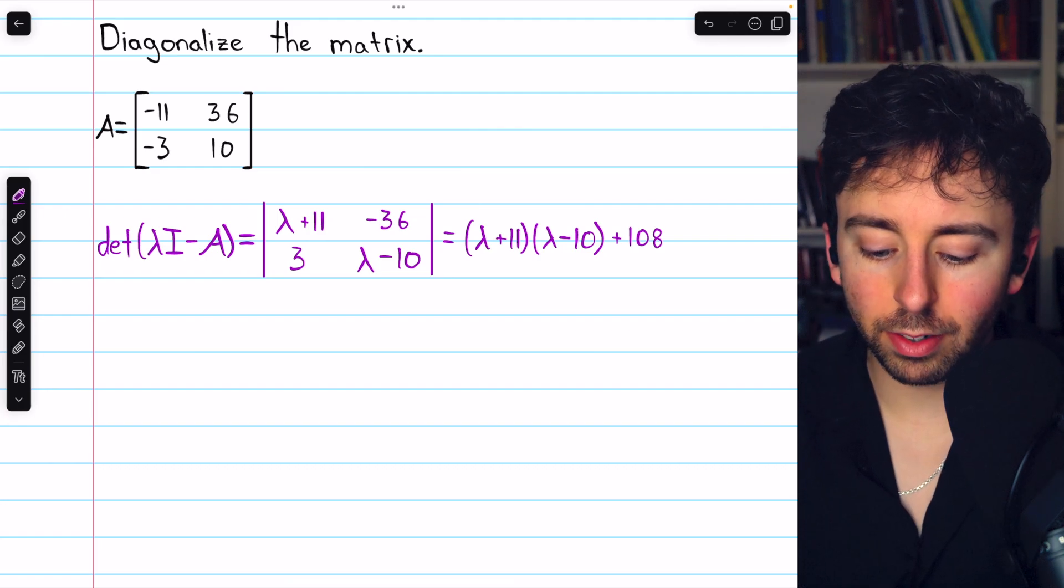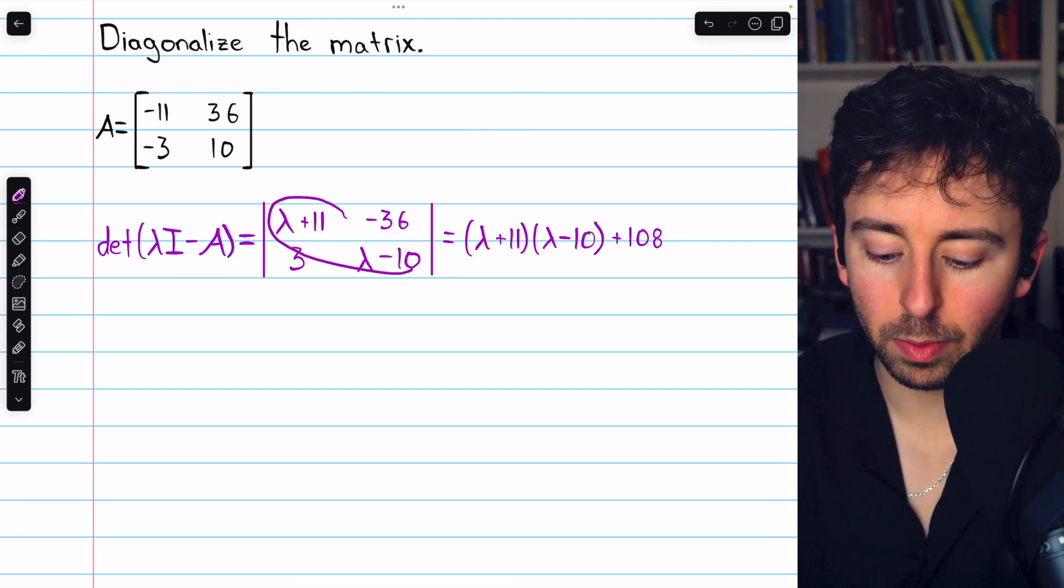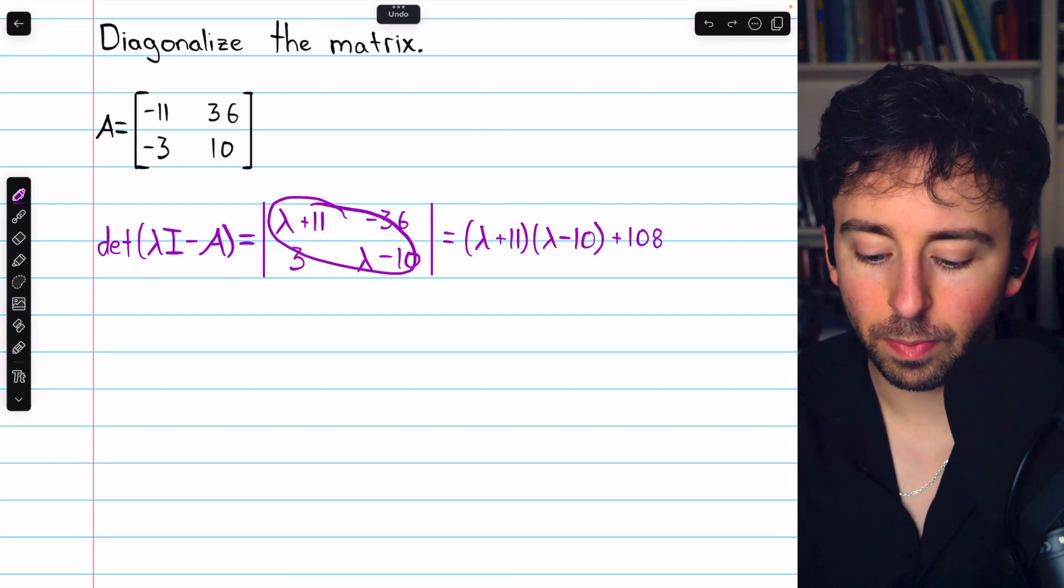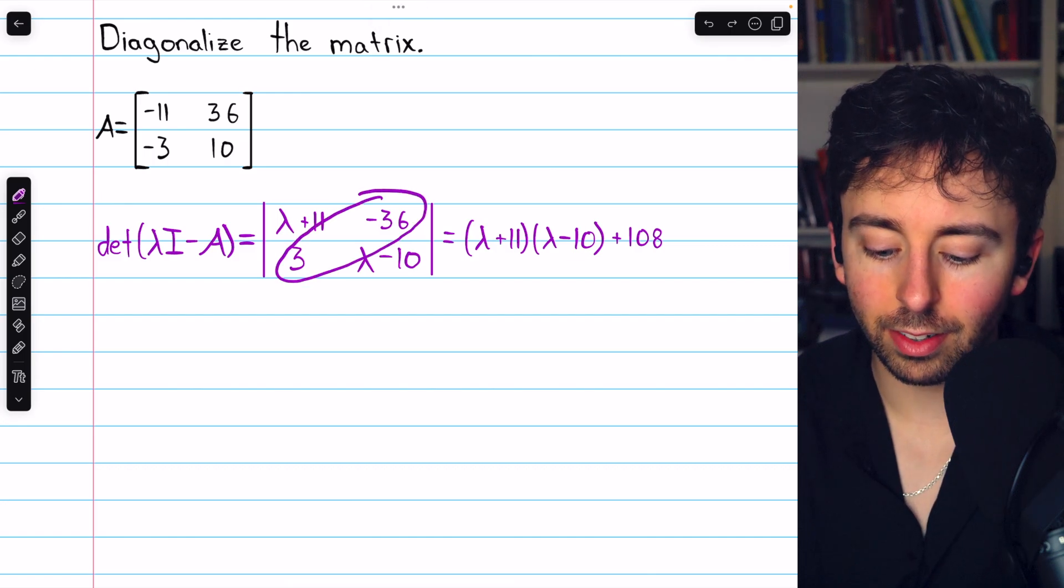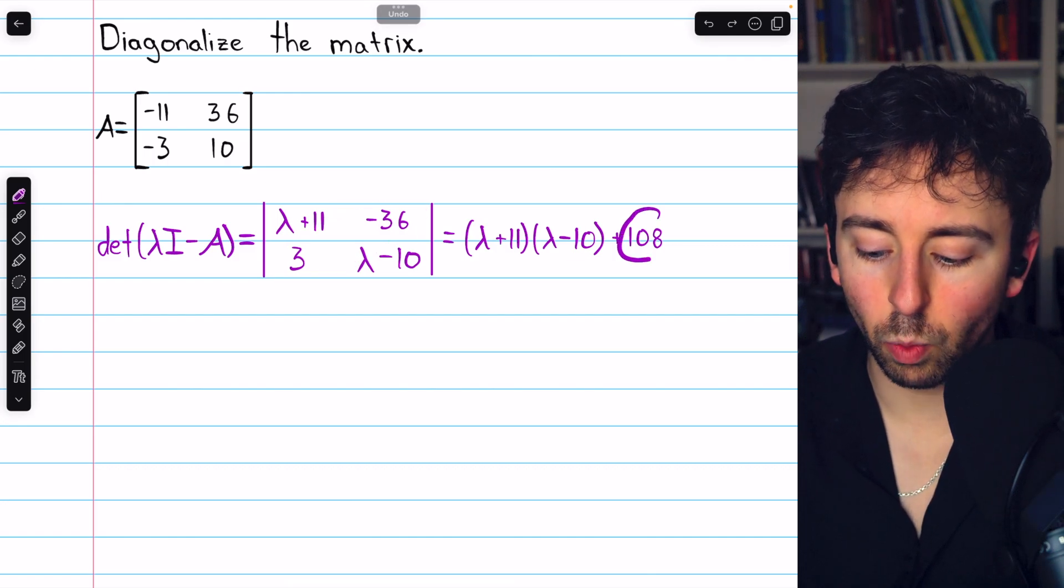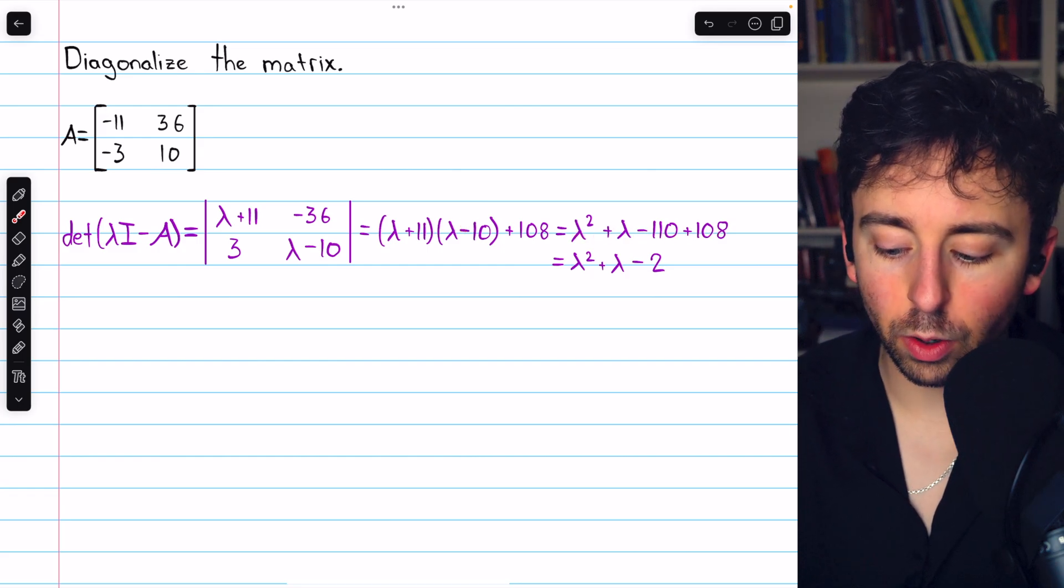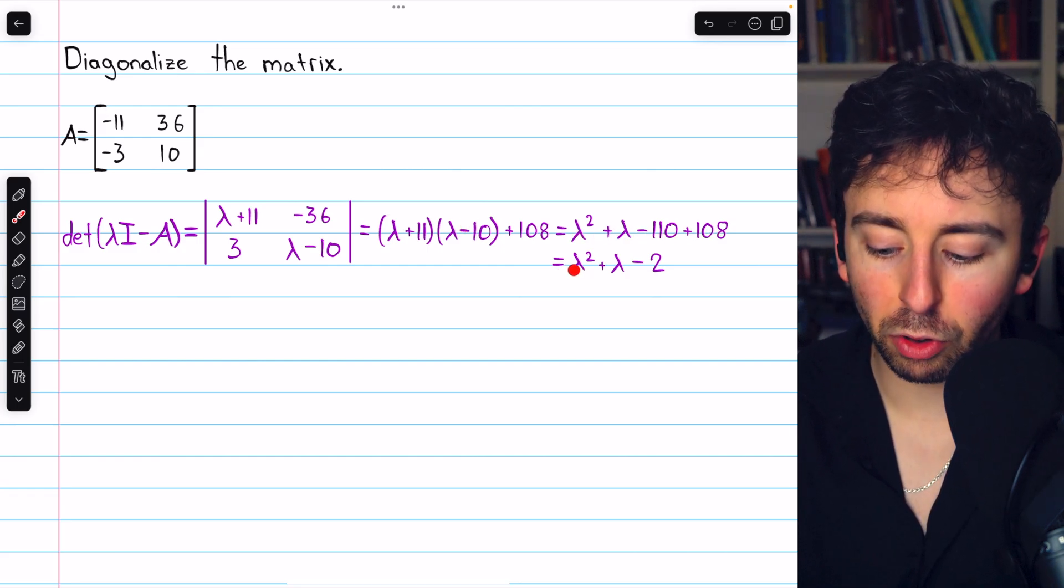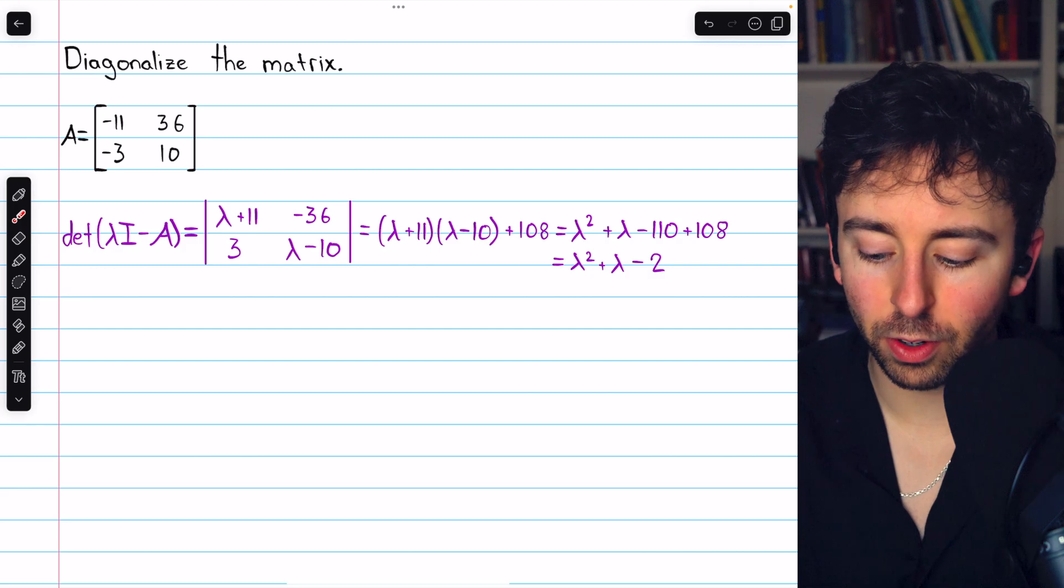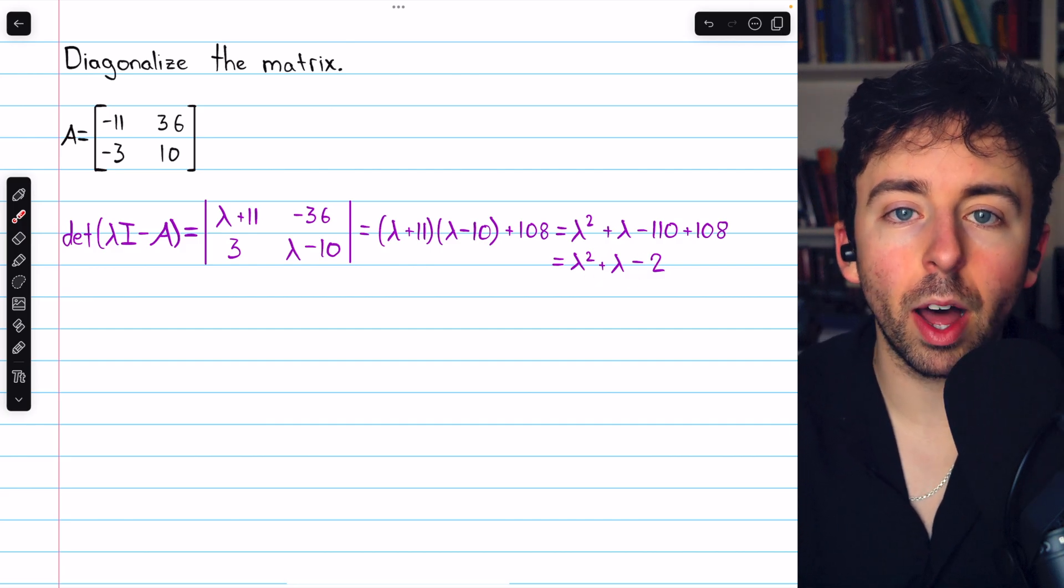This is a 2×2 matrix, so its determinant is straightforward. (λ+11)(λ-10) minus -36×3, so plus 108. Doing this multiplication gets us to this quadratic, which we can then simplify to λ² + λ - 2. That's our characteristic polynomial.